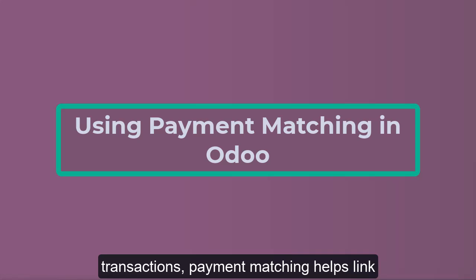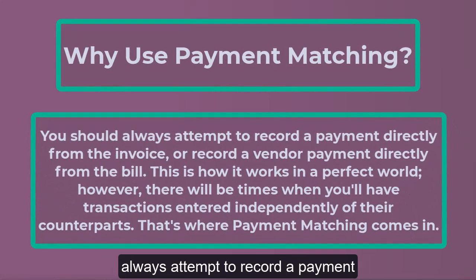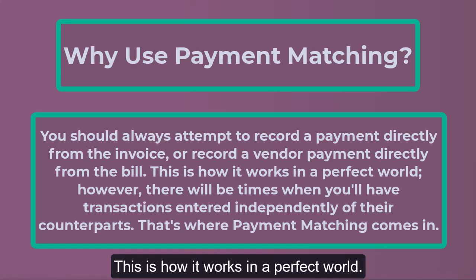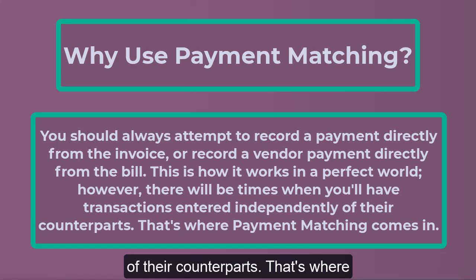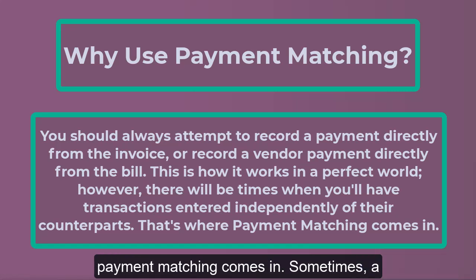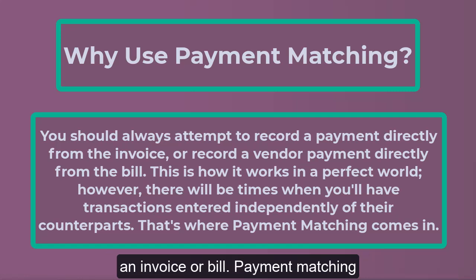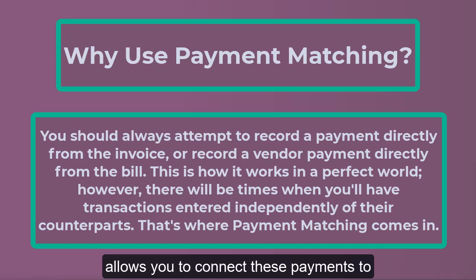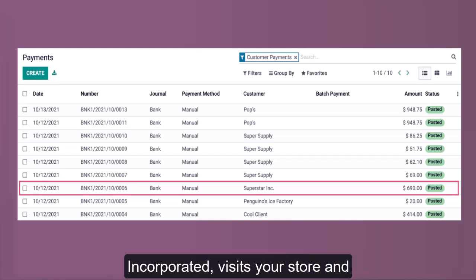Using payment matching in Odoo: while bank reconciliation focuses on matching bank transactions, payment matching helps link payments that were recorded separately. You should always attempt to record a payment directly from the invoice or record a vendor payment directly from the bill. However, there will be times when you'll have transactions entered independently of their counterparts. Sometimes a payment is recorded without linking it to an invoice or bill — payment matching allows you to connect these payments to their correct counterpart.